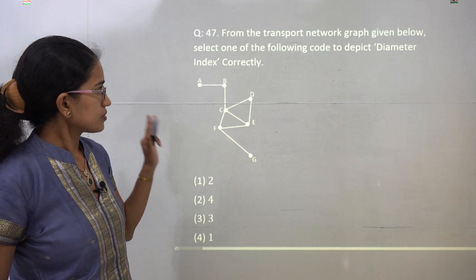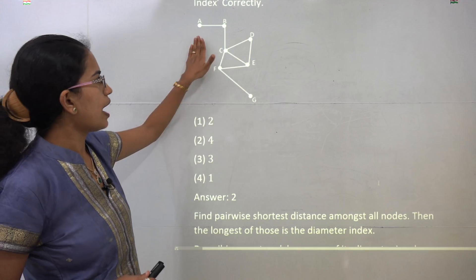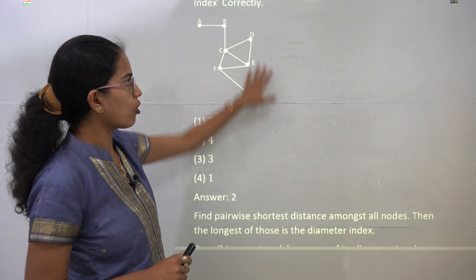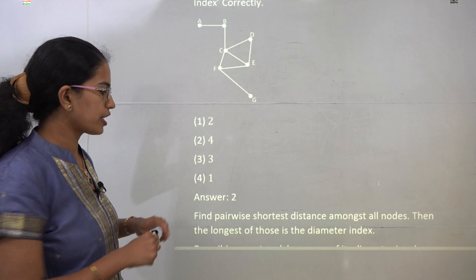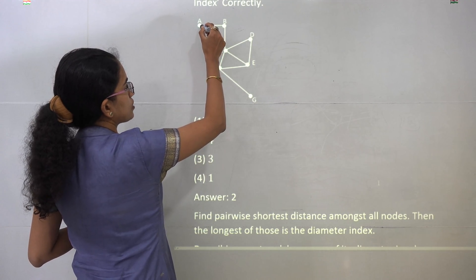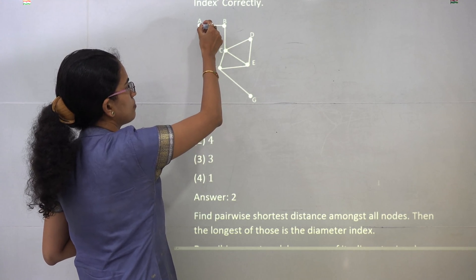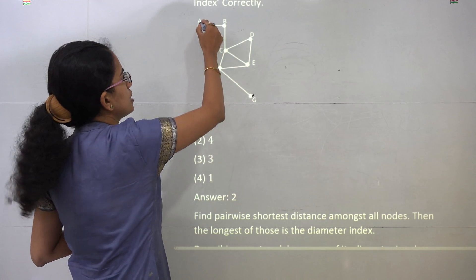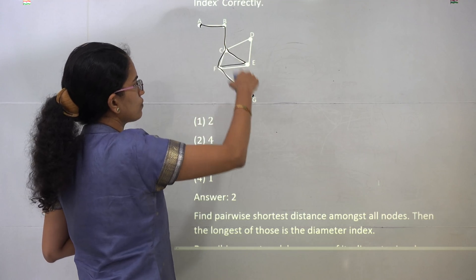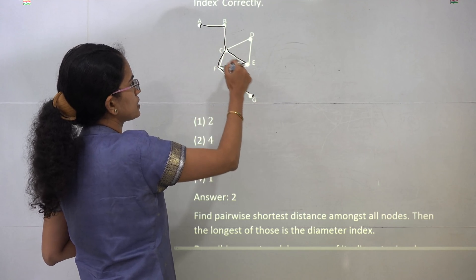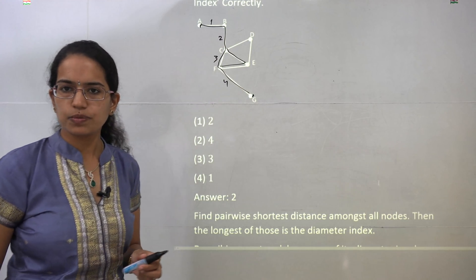The next question asks you to find the diameter index for the given diagram. You must find the pairwise shortest distance among all nodes, then identify the longest of those shortest routes — that is the diameter length. For example, from A to G, one route goes one way and the other goes another way; the shorter of the two is selected. In this case, the diameter index is 4.